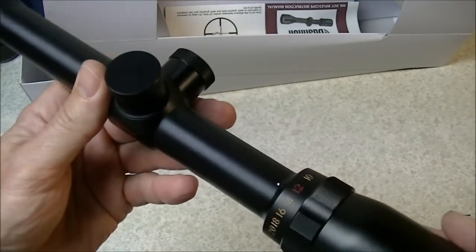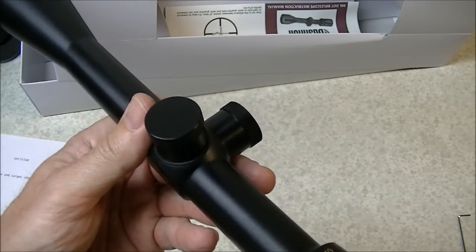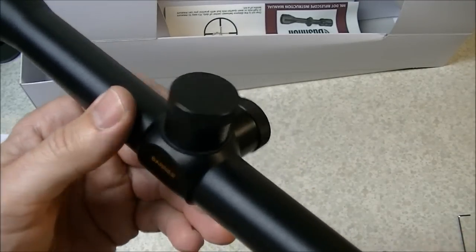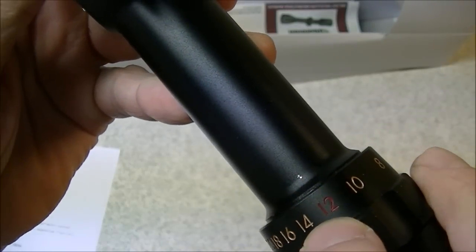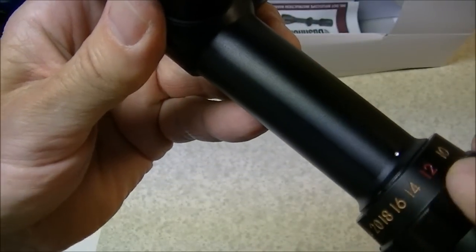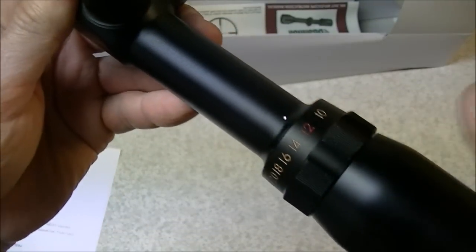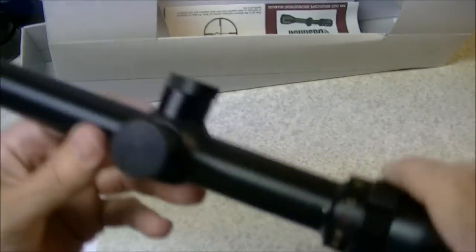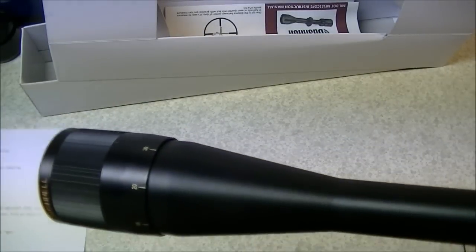This is a second focal plane scope so the size of the mil dots looks the same regardless of whether you've got the power set to a low setting or a high setting, and that means that the mil dots are not actually accurate at all settings. As you can see here on the power ring, this number 12, the 12 power is highlighted in red as opposed to all the other power settings which are in gold. So these are actually true mil dots or as close as they're going to be to being true mil dots with the scope set to the 12 power. So you can't really use the mil dots for the purposes of estimating range and distance and target size and all that stuff unless you set the scope to 12 power.